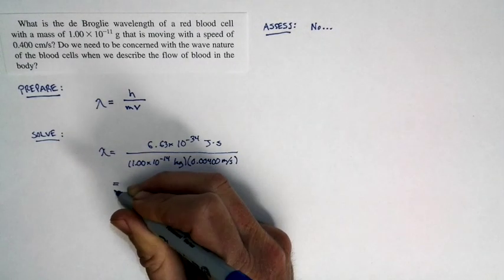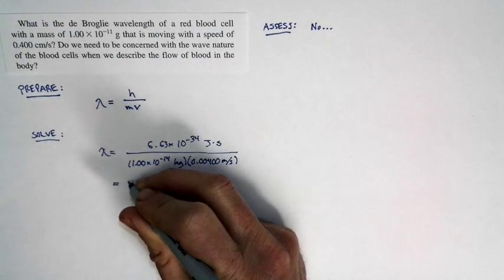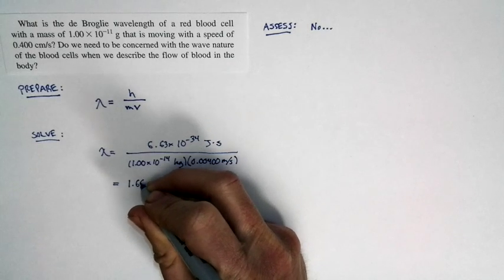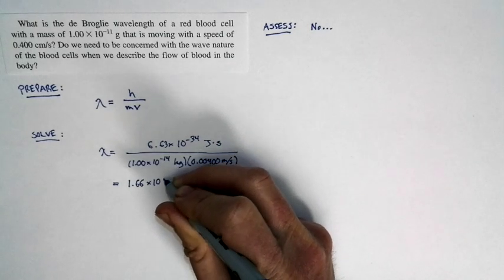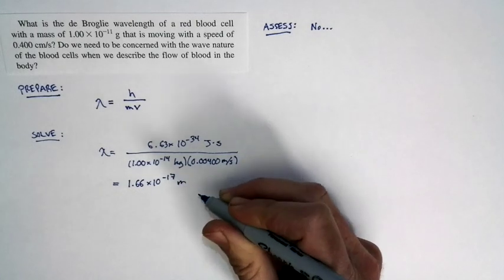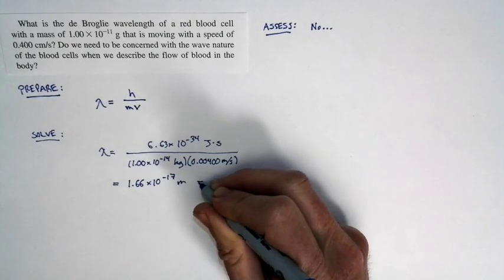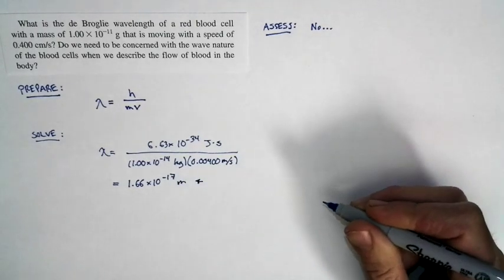With those numbers in place, I calculate the size of the wavelength to be 1.66 times 10 to the negative 17th meters. That's quite small. That's smaller than the size of a nucleus.